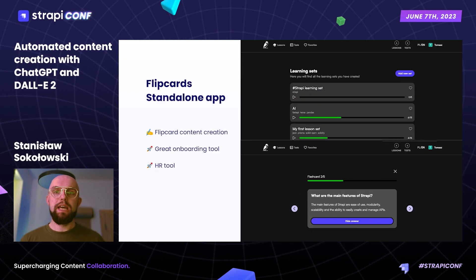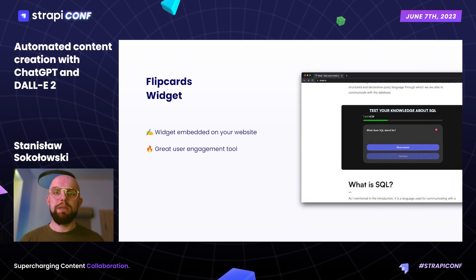The second application of AI-generated content that we owe to the flexibility of Strapi is a Flashcard and Tests app we've created using the CMS. In our standalone app, users may take tests based on handmade or automatically generated content, which may be great for onboarding your employees in a fun way of testing knowledge about your company. We've also created a widget that may be injected between the content of your blog posts and may serve as a great tool for user engagement on your website.